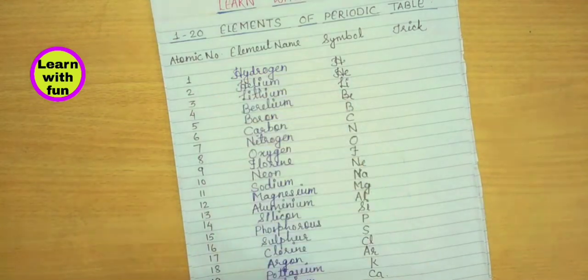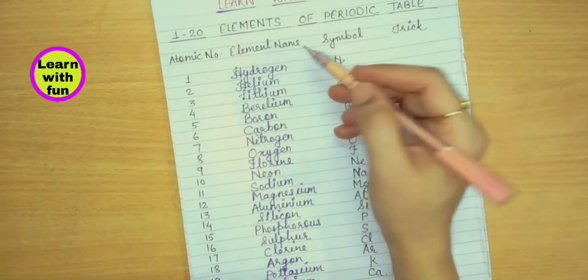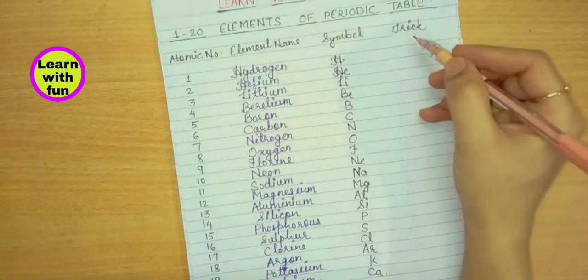Here I have written elements atomic number 1 to 20. Here I have written element name, here is the symbol, and here we will write the trick. So let's start.